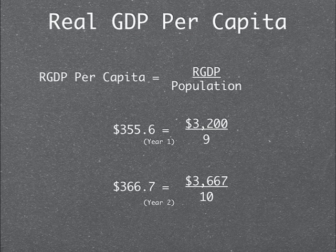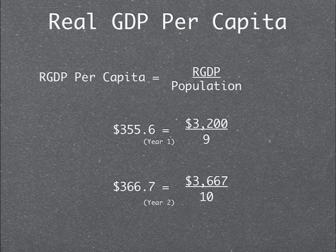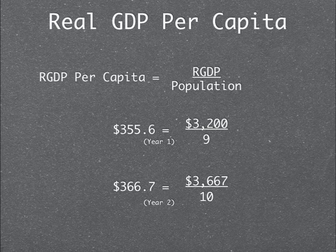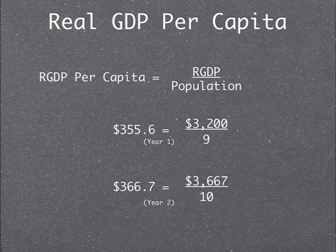Real GDP per capita equals real GDP divided by the population. For year 1, the real GDP is 3,200 and the population is 9, so the real GDP per capita equals 355.6. For year 2, the real GDP is 3,667 and the population is 10, giving a real GDP per capita of 366.7.